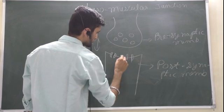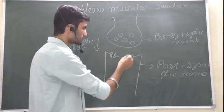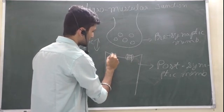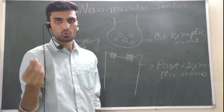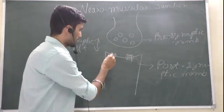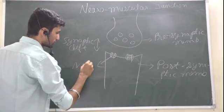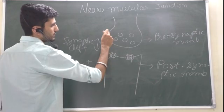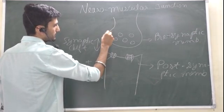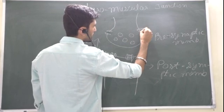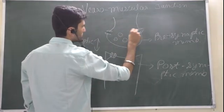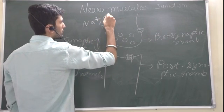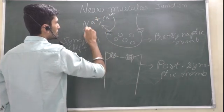These are the receptors present in the postsynaptic membrane. These receptors have ligand-gated channels which are actually sodium channels. Some channels are also present on the presynaptic membrane — sodium or calcium channels.